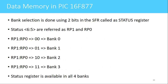Bank selection is done using two bits in the SFR called the status register. Since there are four banks, two bits are needed to select any one. For bank 0, those bits are 00; for bank 1, 01; for bank 2, 10; and for bank 3, 11. These bits are bit number 5 and bit number 6 of the status register, called RP1 and RP0. Using these two bits we can select the desired bank. The status register is present in all four banks.